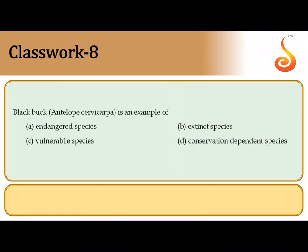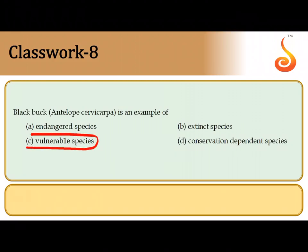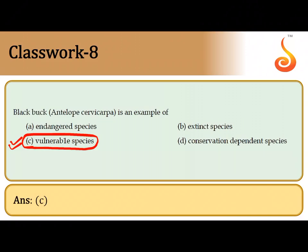The eighth question covers black buck, Antilope cervicapra. Black buck is identified as a vulnerable species, which means it does not face an immediate threat of extinction, but in the near future, if proper concern is not offered, it may step into the category of endangered species. So the answer is option C — black buck is a vulnerable species.